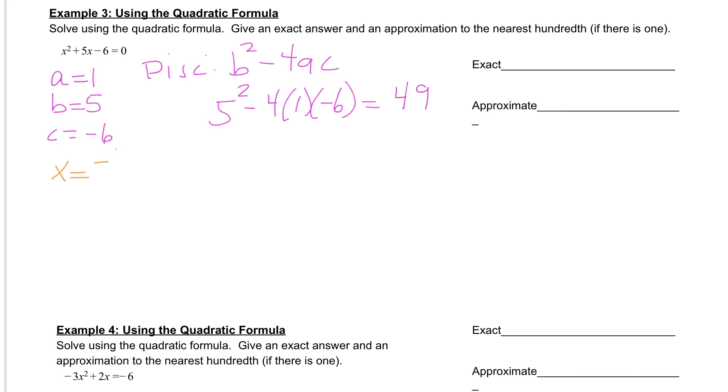x is equal to the opposite of b plus or minus the square root of b squared minus 4ac all over 2a.